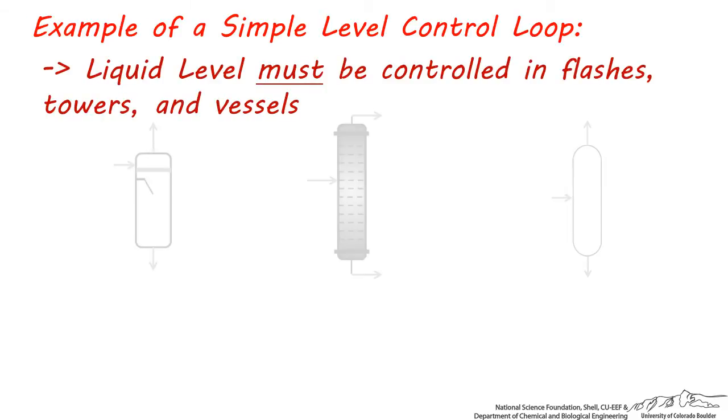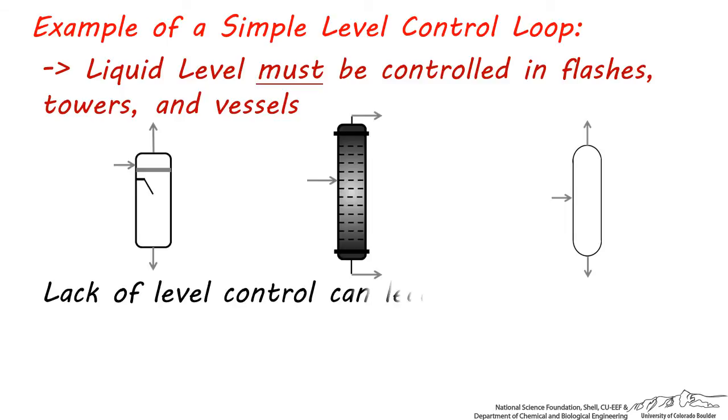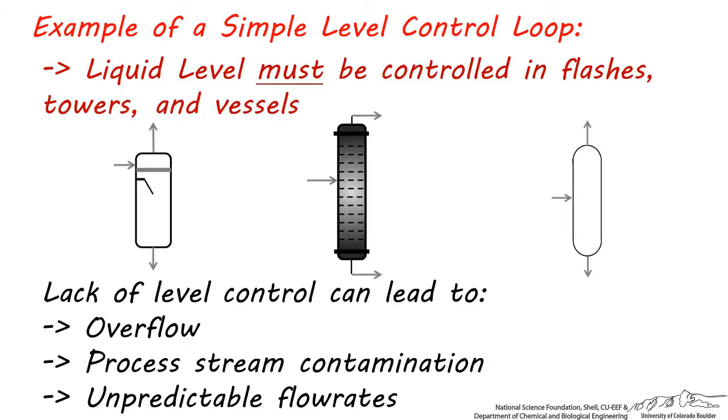Let's next look at a simple level control loop. Liquid level is an important variable to control in flash units, towers, and vessels. In almost all cases, all of these pieces of equipment have some kind of liquid level control. Without level control, they would overflow with liquid or run dry. These conditions can lead to overflow in these or other units, process stream contamination, and unpredictable flow rates through the process.